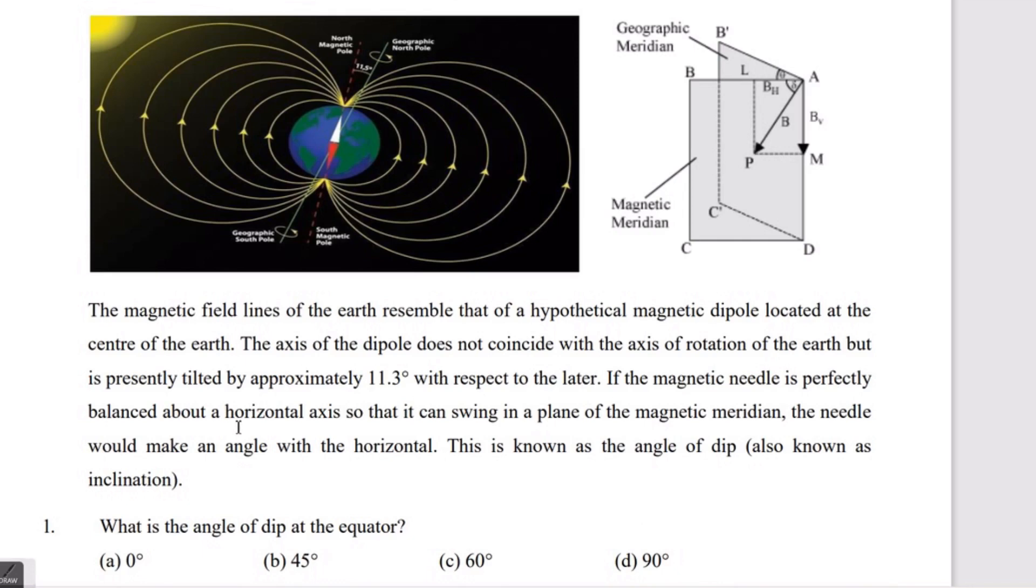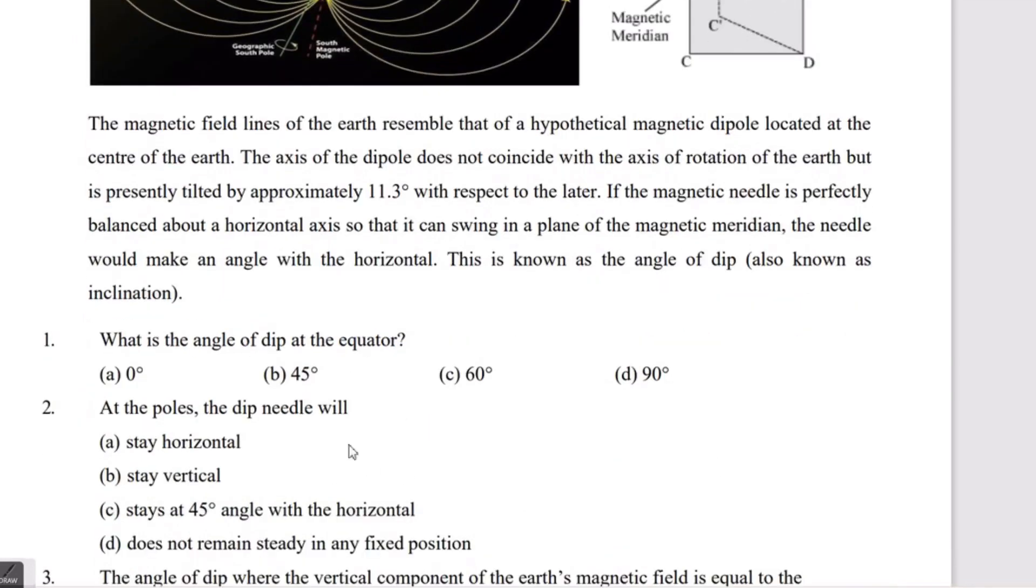If the magnetic needle is perfectly balanced about a horizontal axis so that it can swing in a plane of the magnetic meridian, the needle would make an angle with the horizontal. This is known as the angle of dip, also known as inclination.